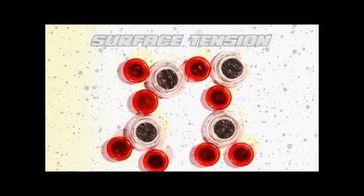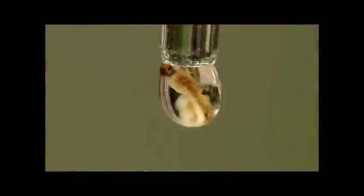Surface tension is a result of cohesion, and is the measure of how difficult it is to break the surface of a liquid. We can observe the high surface tension of water by watching this mosquito step onto its surface, or this insect as it struggles to free itself from a droplet. Surface tension is also what causes a water droplet to take a spherical shape. Water is the most cohesive of all non-metallic liquids.